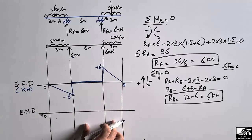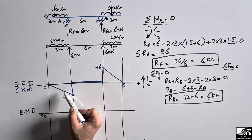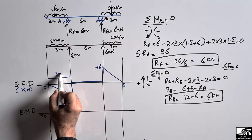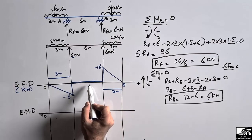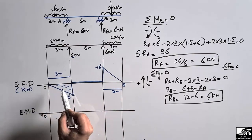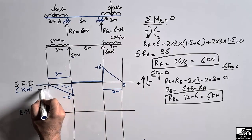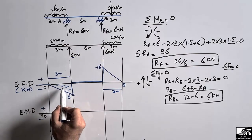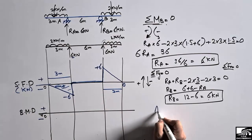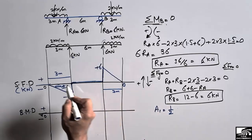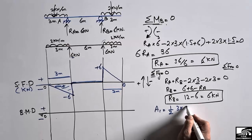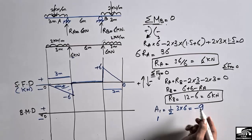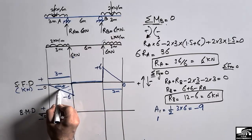To draw the bending moment diagram, we find the box areas of the shear force diagram. The left triangle (A1) has a base of 3 meters and a height of 6 kilonewtons. This shear force triangle is below the reference line so it is negative. Area = half × base × height = half × 3 × 6, which gives minus 9 kilonewton·meters. Since the shear force diagram is a first-degree line, the bending moment diagram will be a second-degree (parabolic) line. So at support A, the bending moment is minus 9 kilonewton·meters.